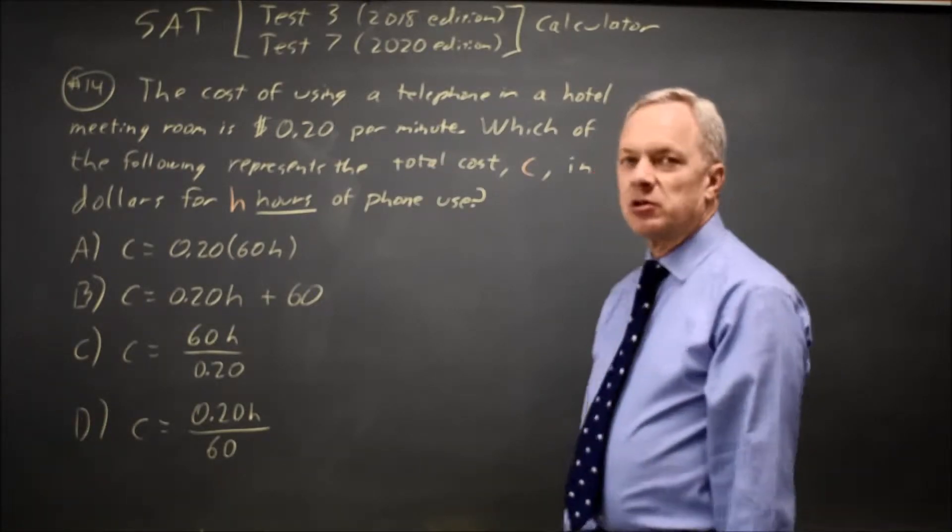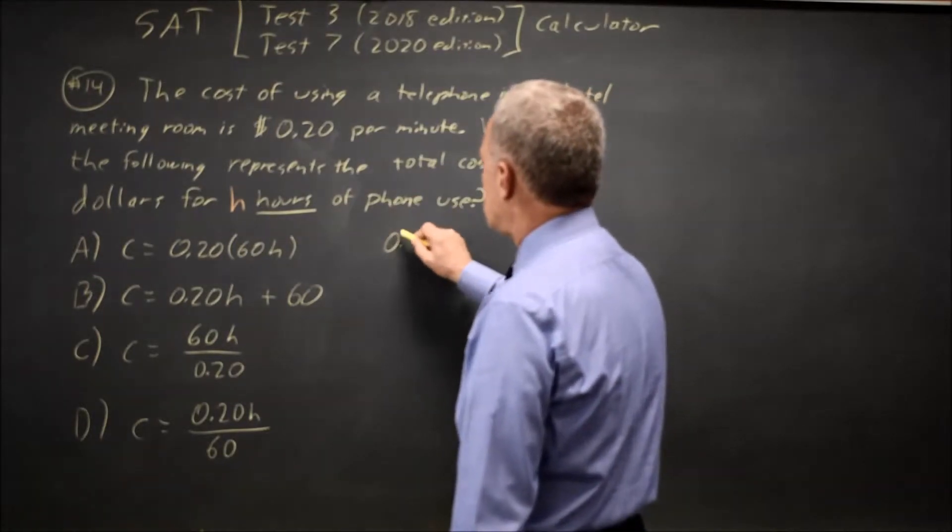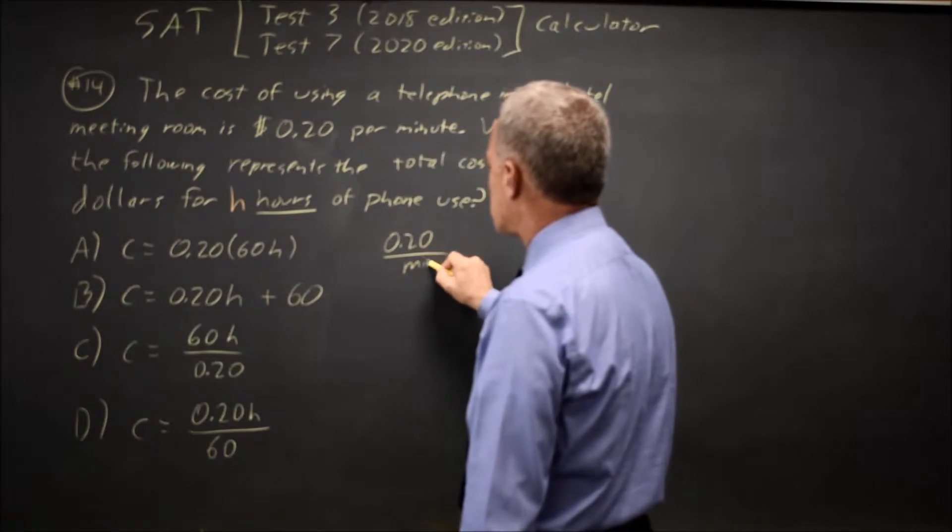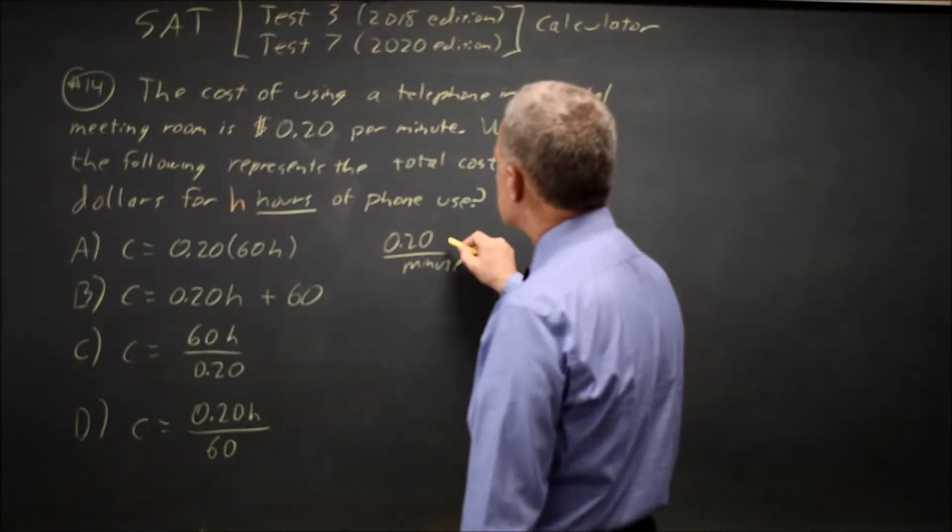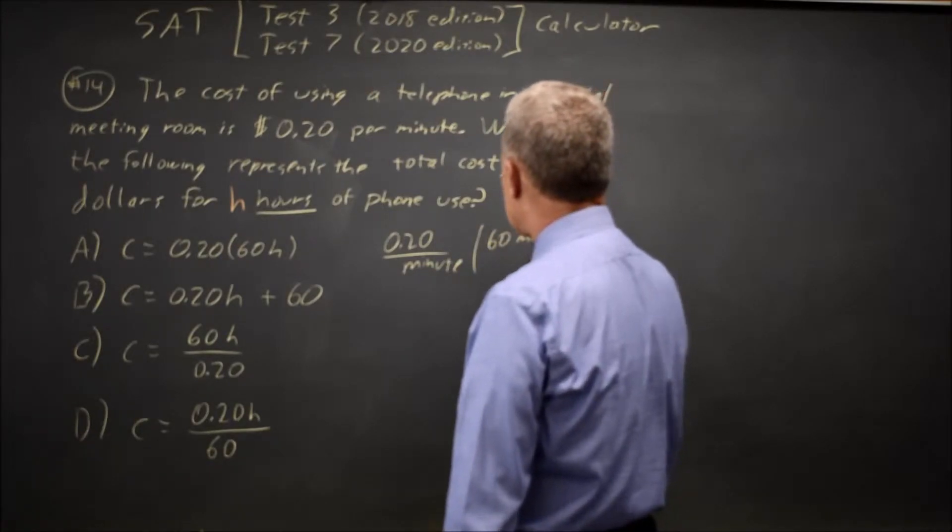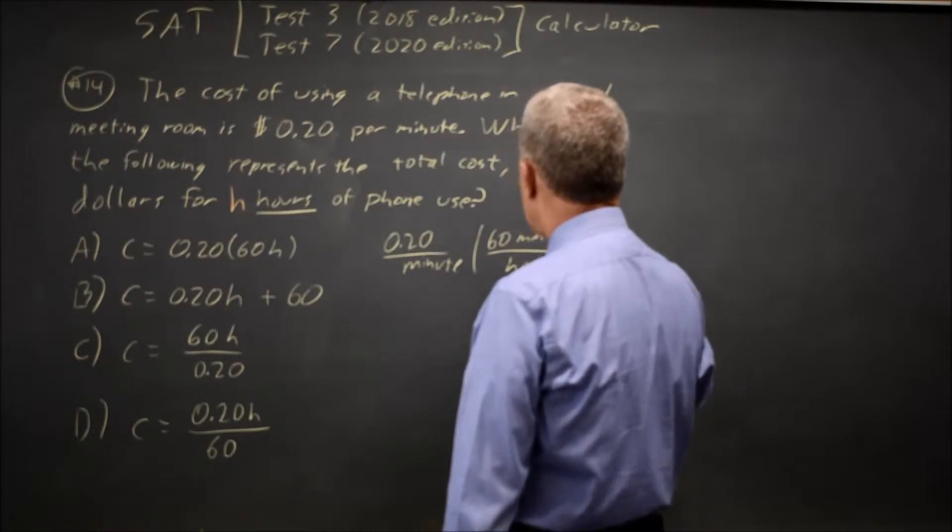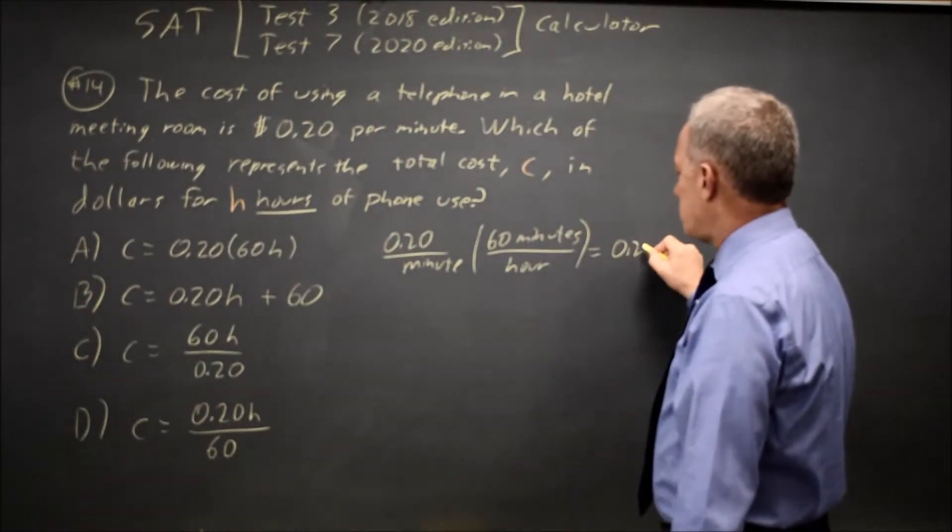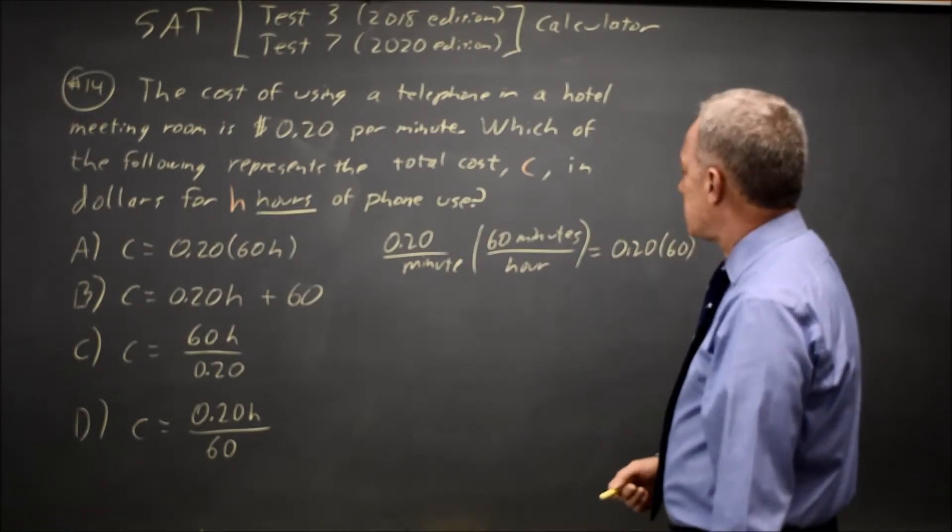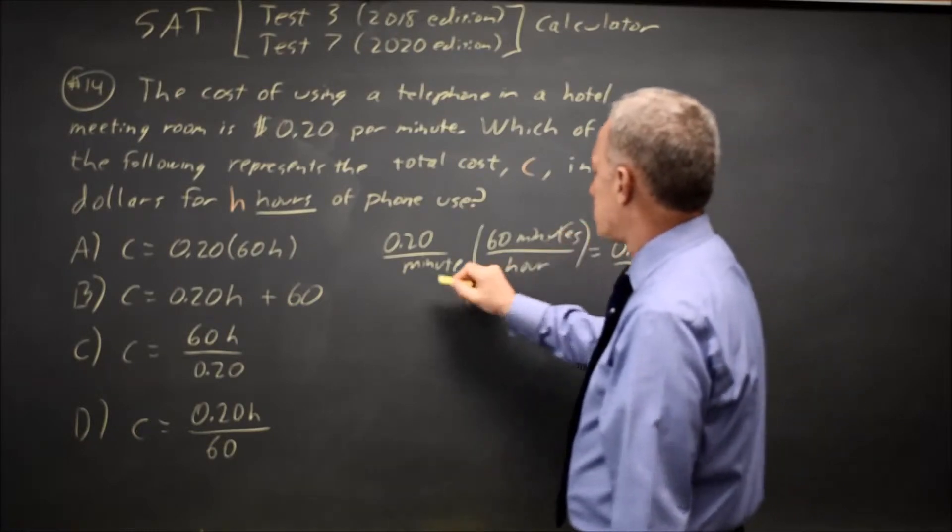One easy way to approach this is to assume we are on the phone for one hour. So, 20 cents per minute times 60 minutes per hour equals .20 times 60 is the charge per hour, because the minutes cancel.